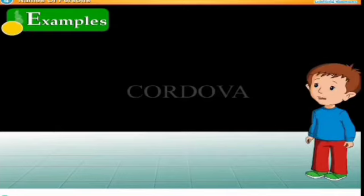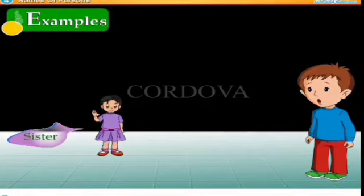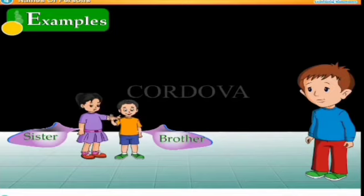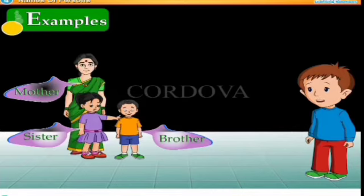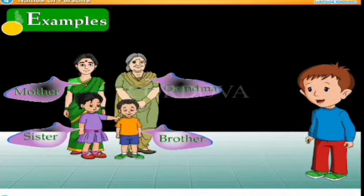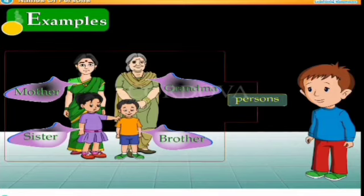Persons around us — hamare aas paas rehne wale persons. Jinhe aap apni family mein bhi jaante hain, aur aap unhe name bhi kar sakte hain. For example, your sister, brother, mother, or your grandmother. Aapki family mein yeh rehte hain — yeh hain persons.